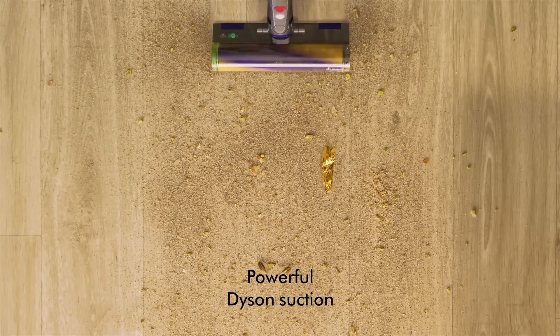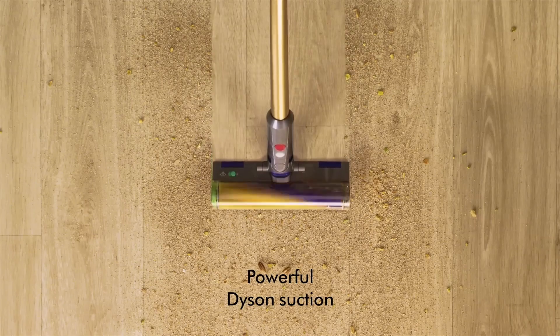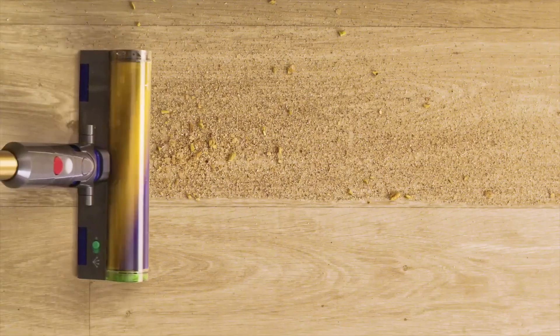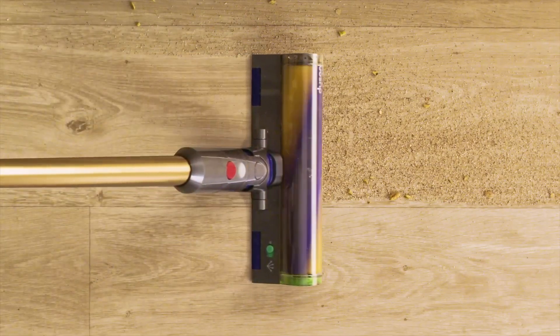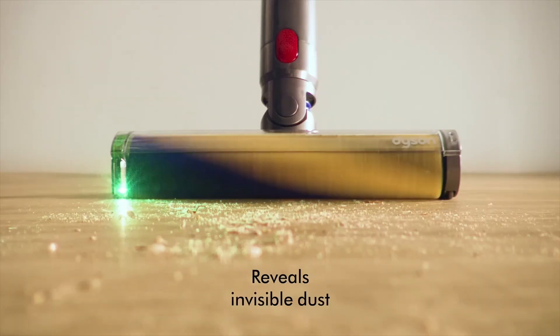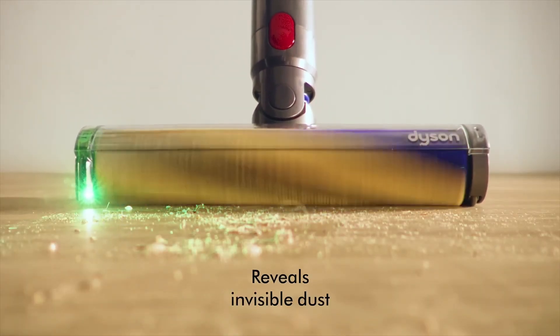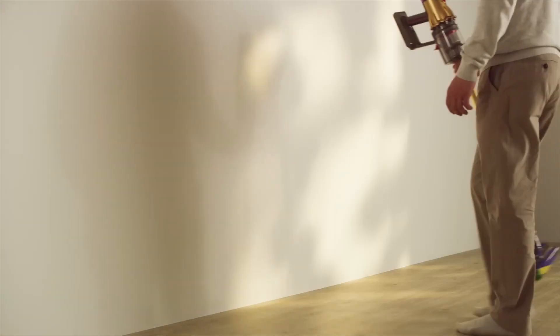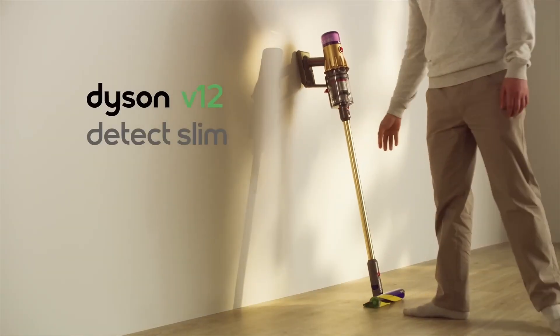Number 4. Dyson V12 Detect Slim. The Dyson V12 Detect Slim is a cutting-edge cordless vacuum cleaner that combines advanced technology with sleek design to deliver an unparalleled cleaning experience. One of its standout features is the innovative laser-detect technology that illuminates dust and debris on hard floors, allowing users to see and capture particles that might otherwise go unnoticed. This feature is especially beneficial for those who want to ensure a thorough clean, as it highlights areas that require extra attention.